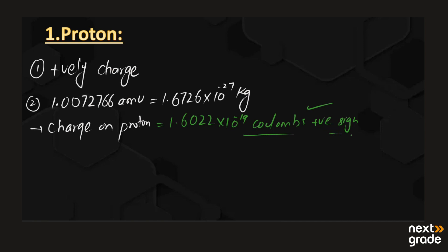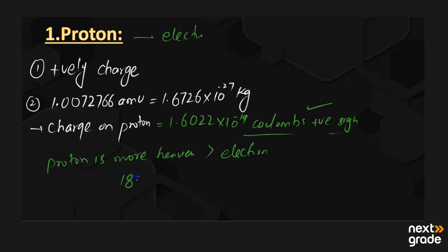If we make a comparison of the proton with the electron, protons are more heavier as compared to the electron — almost 1837 times having more mass as compared to the electron.